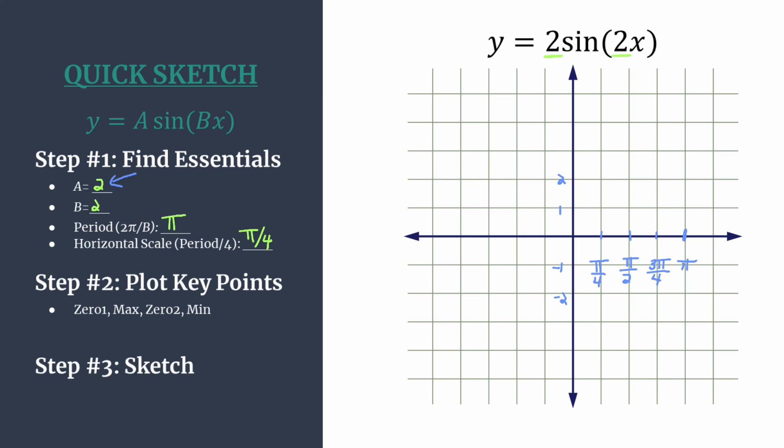Now we're ready to plot our key points. The sine pattern is: 0, maximum 1, 0, minimum 2. So let's plot our first 0 at the origin. Our maximum will happen at that first horizontal tick mark to the right, and we get the y-coordinate by looking at the value of a, so it is 2. The next tick mark gets 0, and then 3π over 4 gets the minimum, with y-coordinate equal to the opposite value of a, or negative 2.